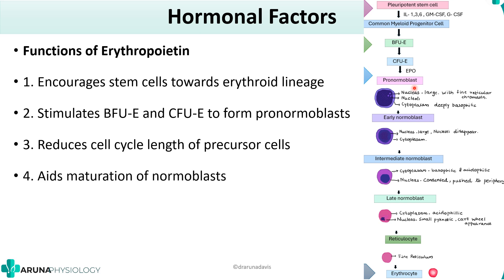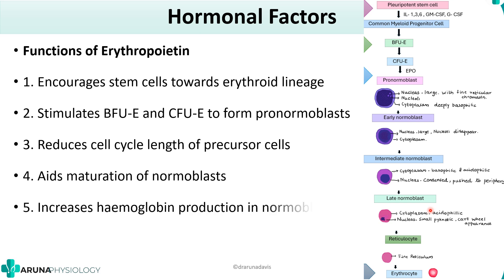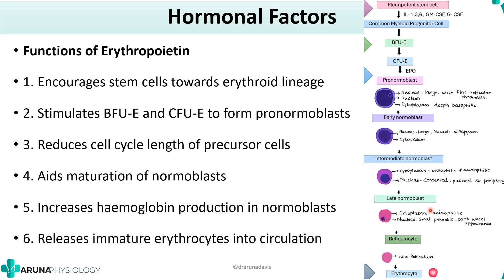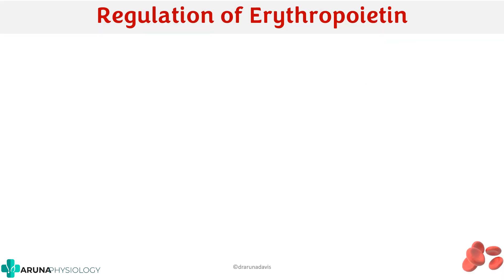Erythropoietin aids in the maturation of the normoblast — it reduces the cell cycle so that cells become more mature faster. It also increases hemoglobin production in the normoblast and releases immature erythrocytes into the circulation. The immature erythrocytes here mainly refers to reticulocytes, which are the immediate precursor of erythrocytes. So at every step of erythropoiesis, erythropoietin has a role, and that is how it enhances erythropoiesis.